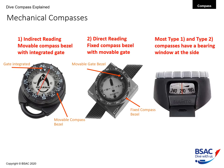Both compass types have a bearing window at the side — in this case showing a bearing of 210 degrees. To differentiate between an indirect and a direct reading compass, you can look at the numbers or degrees around the bezel: they go in opposite directions.